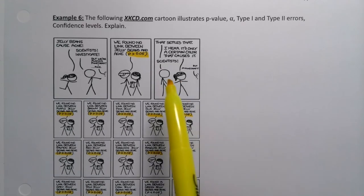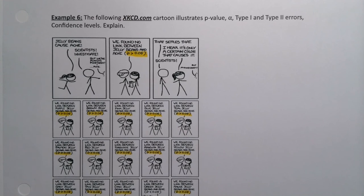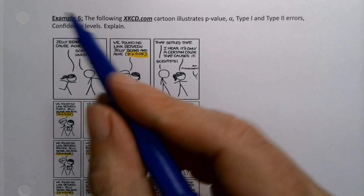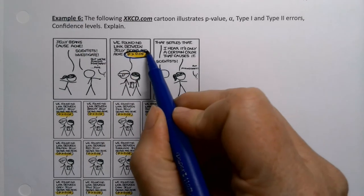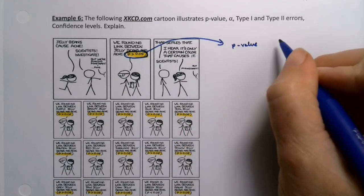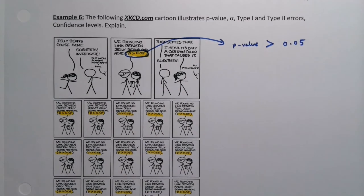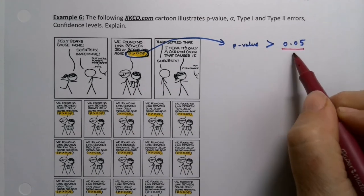All right, so let's talk about this whole P greater than 0.05 thing that we keep seeing. So let's look at that for a second, because that'll illustrate P value and alpha. So you can see they're saying the P value is greater than 0.05, which is telling us that this must be our alpha.